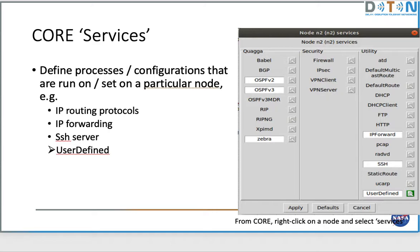When you're not running a scenario, you can right-click on a node in CORE and bring up the services menu. Depending on the version of CORE you have, this will look slightly different, but essentially it tells CORE what processes are going to get run on a particular node, what routing protocols, whether IP forwarding is on, and we have an SSH server turned on along with this user-defined mechanism.